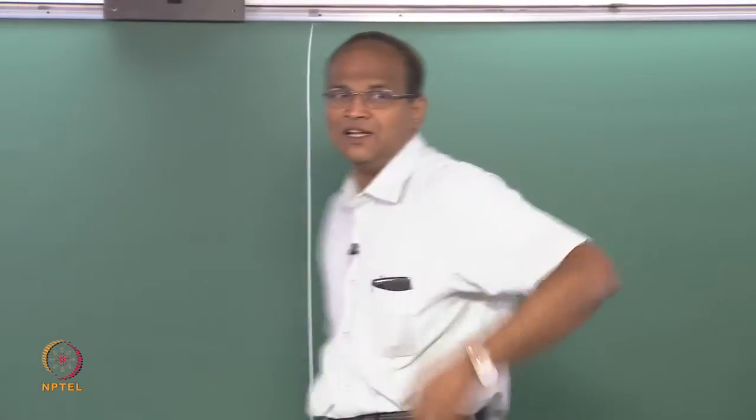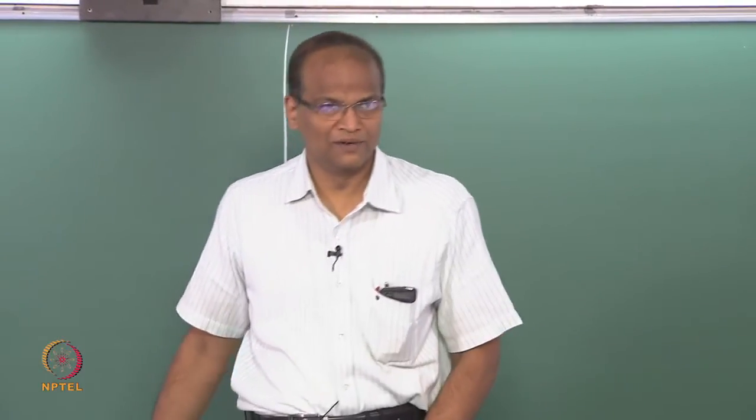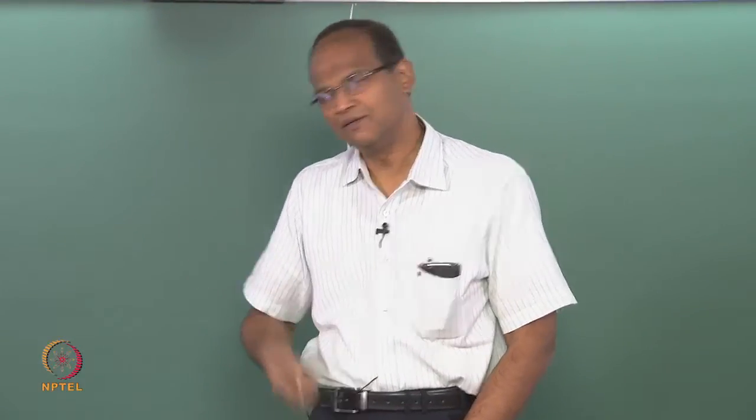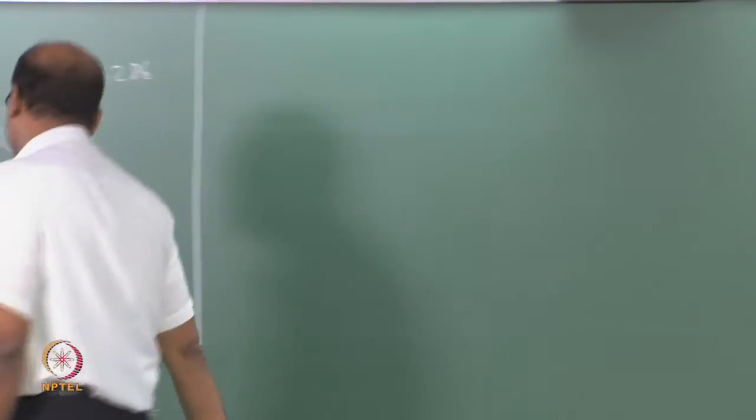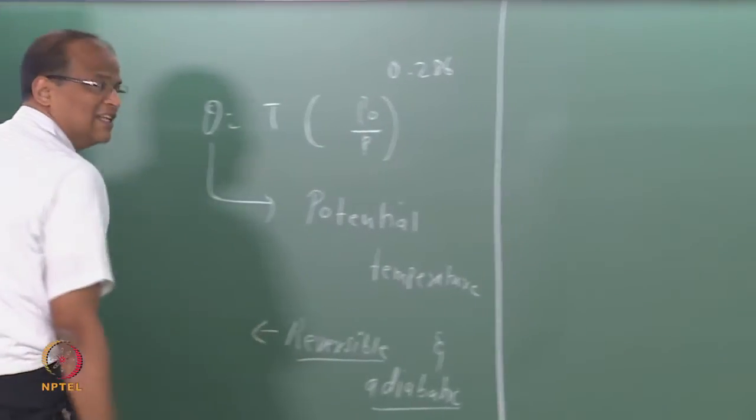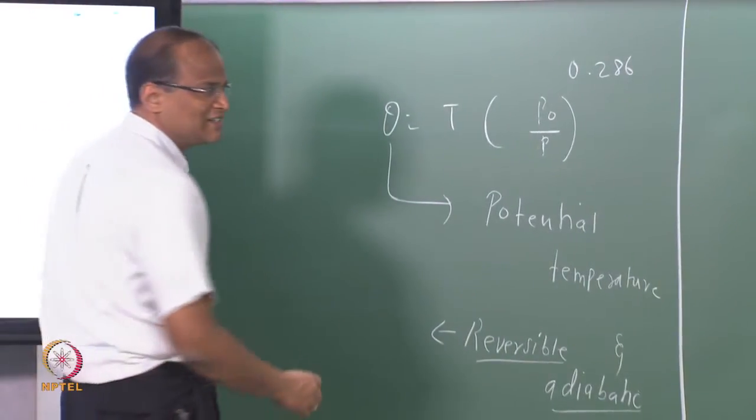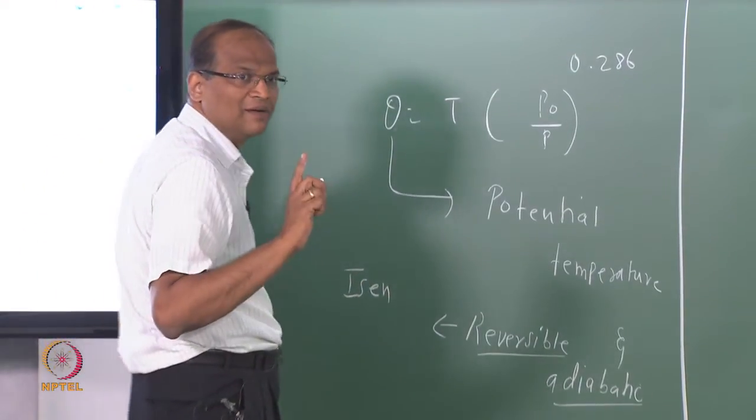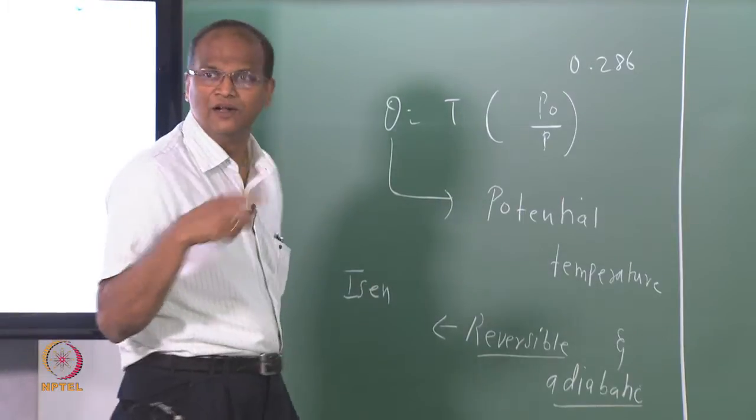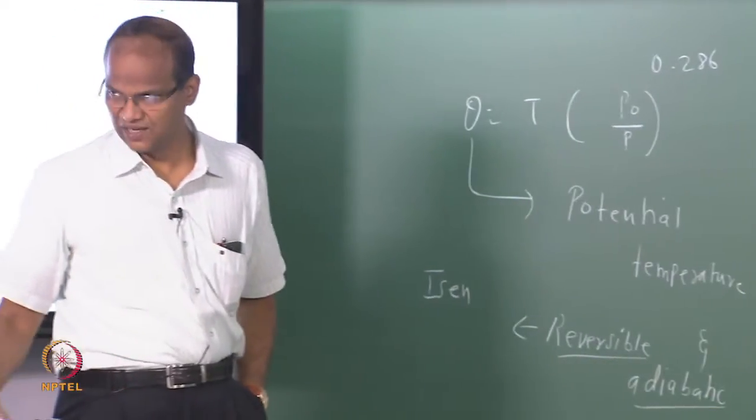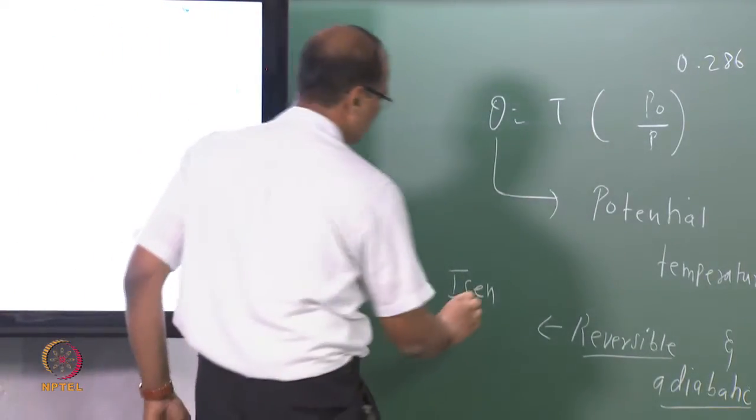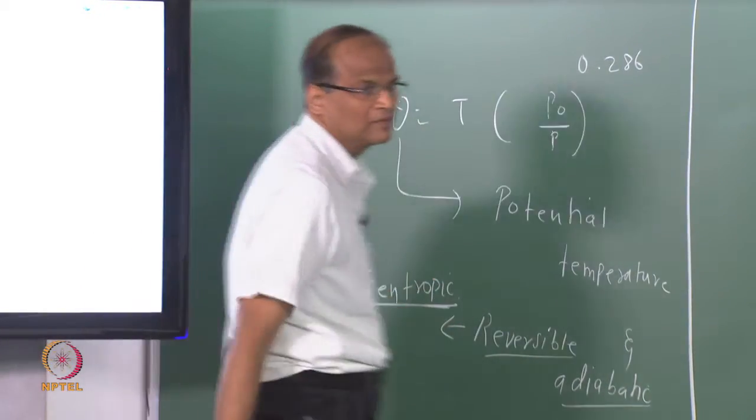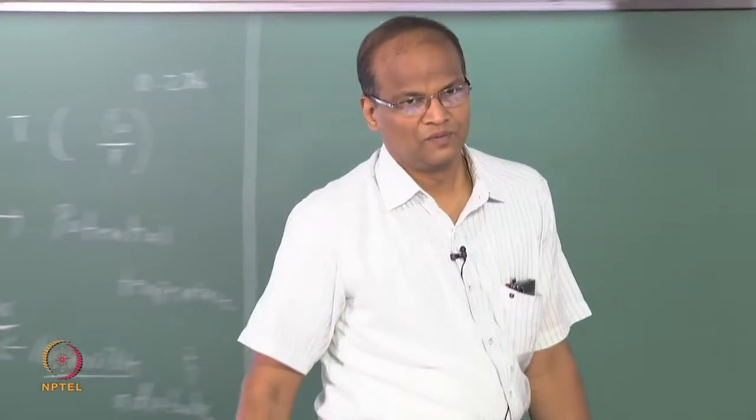Reversible and adiabatic - somebody said it is also called isentropic. It is isentropic, but since we have not introduced entropy, I did not want to mention it. But I promise that we will revisit this and do the second law after some classes.